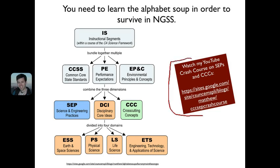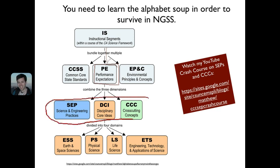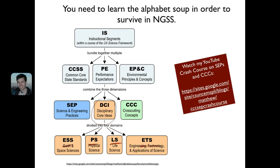There's a crash course you can do to learn about some of those letters, but here's a hierarchical view. Within the California framework, each year of instruction is divided into instructional segments, or IS. Each instructional segment groups together a bunch of standards, or performance expectations — PEs. Each performance expectation represents one item from each of the three dimensions: the science and engineering practices, the disciplinary core ideas, and the cross-cutting concepts. NGSS also identifies four disciplines: ESS for Earth and Space Science, PS for Physical Science, LS for Life Science, and ETS for Engineering, Technology, and Application of Society.